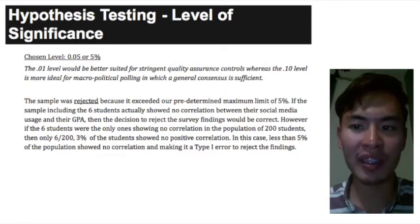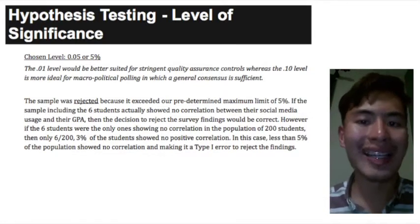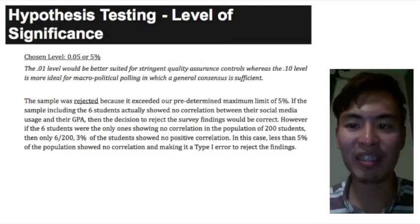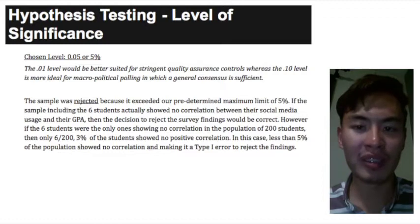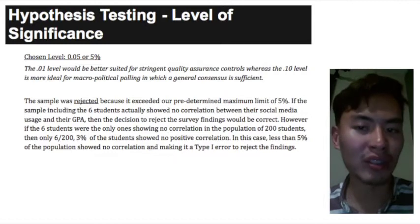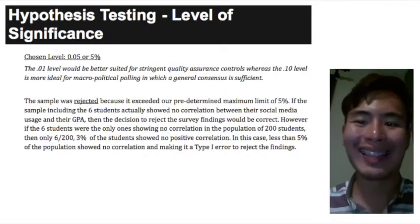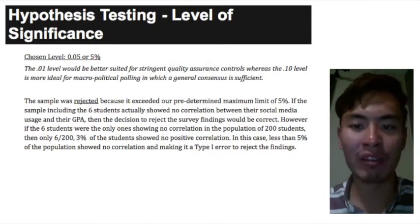Out of 200 Unisim students, we selected a random sample of 50 students for testing. In the sample, six students, or 12%, exceeded four hours of social media usage daily. These outliers showed little to no correlation between their GPAs and social media usage. The sample was rejected because it exceeded our predetermined maximum limit of 5%. If the sample including the six students actually showed no correlation between their social media usage and their GPAs, then the decision to reject the survey findings would be correct.